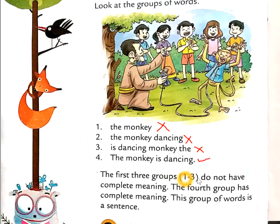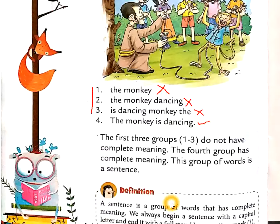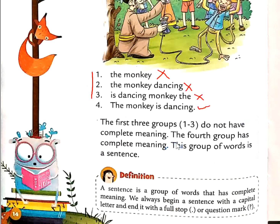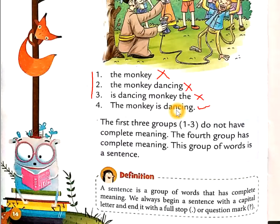Number 4: the monkey is dancing. Yahaan pe humein kuch pata chal raha hai — ke monkey dance kar raha hai. That's why this sentence is the particular sentence which has complete sense. The first three groups — number 1, 2, 3 — do not have complete meaning. The fourth group has complete meaning. So this group of words is called a sentence, because yahan pe humein meaning mil raha hai — yeh complete meaning wala group of words hai.